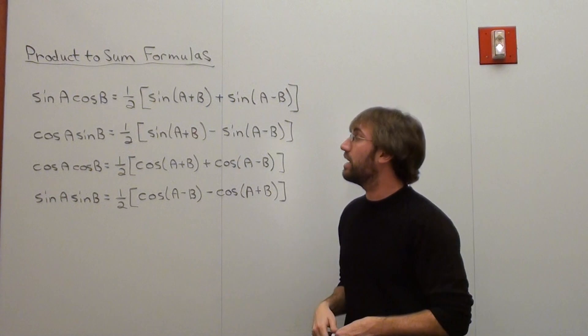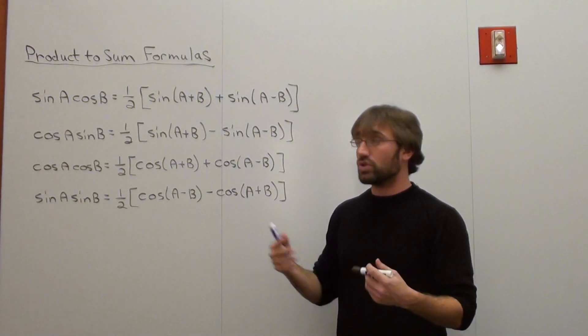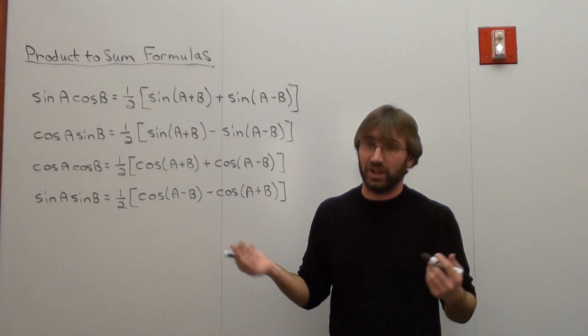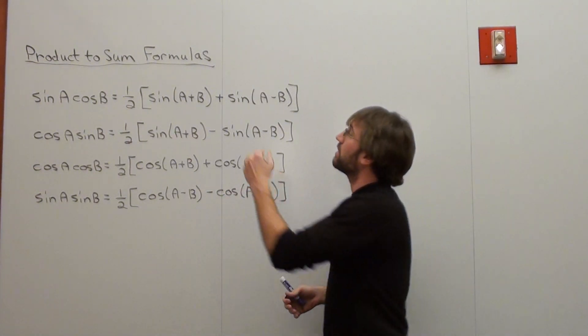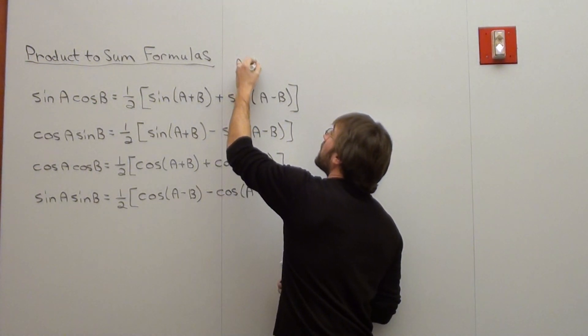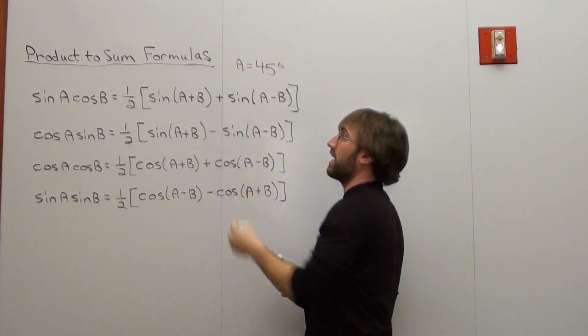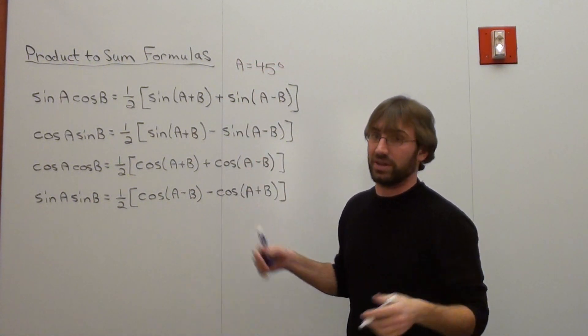It doesn't hurt to just try one out. That won't be too bad. So we're going to try the first one and put in two angles. We're going to say that A is 45 degrees, and B is zero degrees.